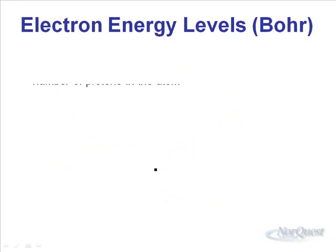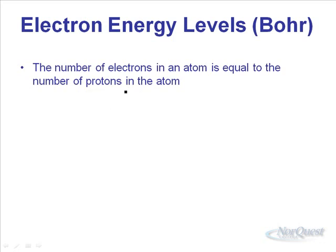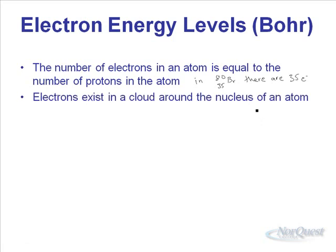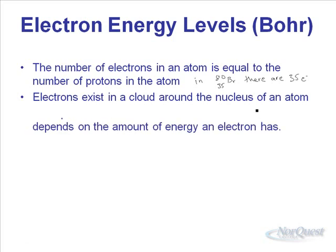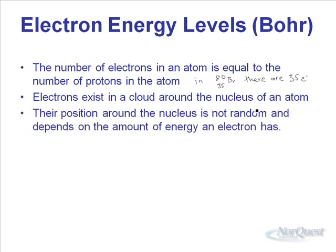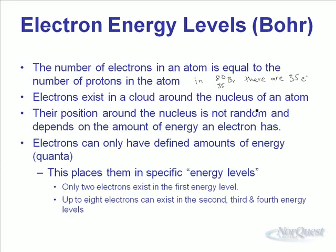Now for electron energy levels and the Bohr model: the number of electrons in an atom always equals the number of protons. In a bromine atom, there are 35 electrons. These electrons exist in a cloud around the nucleus, but their position is not random — it depends on their energy. Electrons can only have definite amounts of energy, measured in quanta, which places them on specific energy levels around the nucleus.